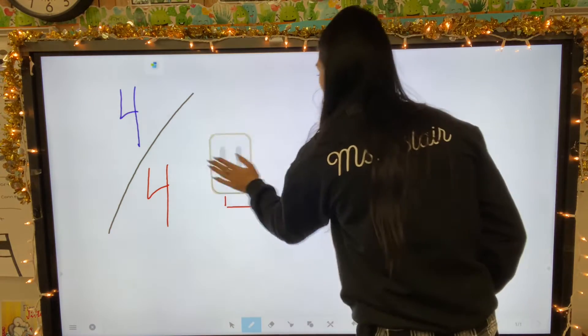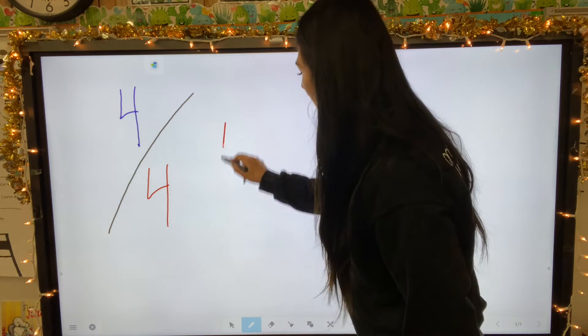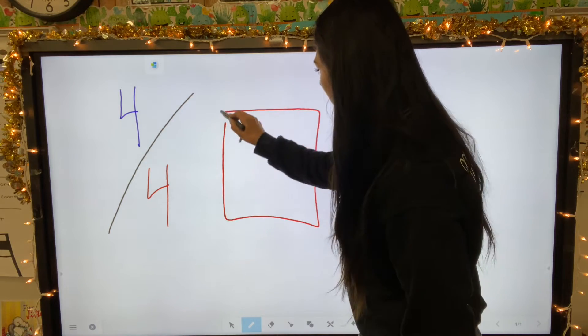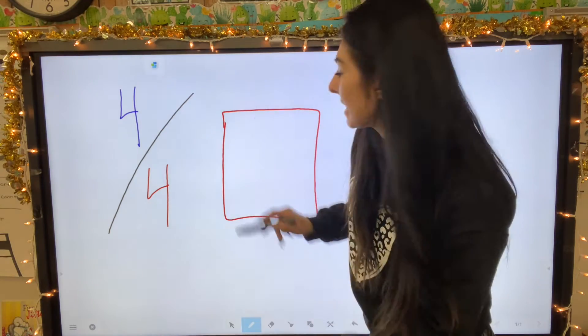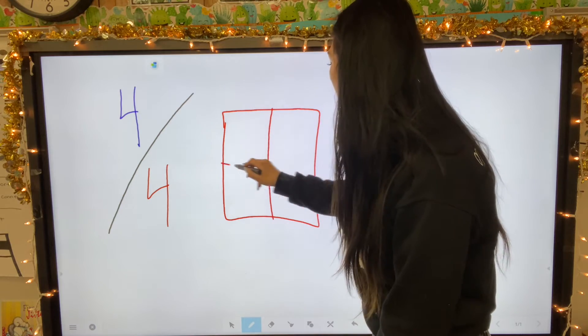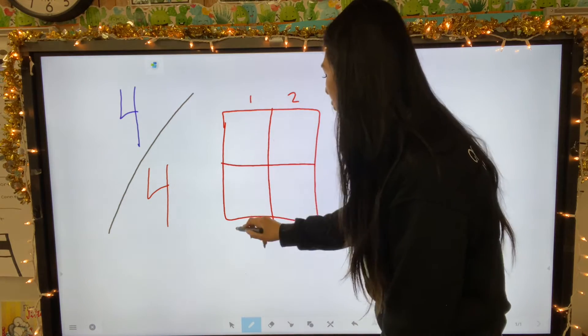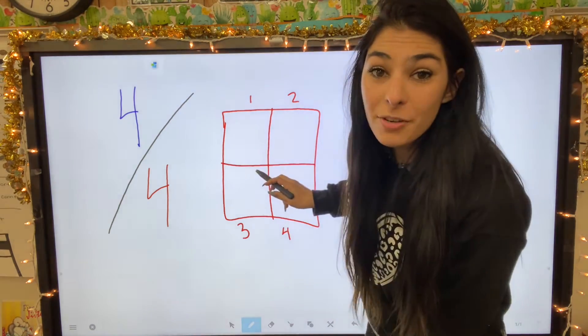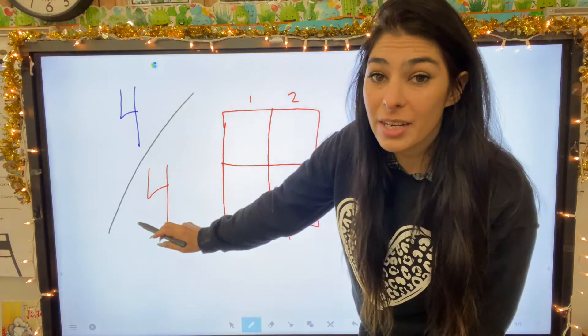So I'm going to draw a square. I'm making it as even as I can. Chop it into four pieces. I've chopped it into four pieces because my denominator is four.